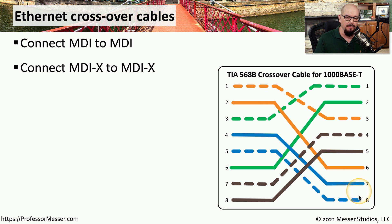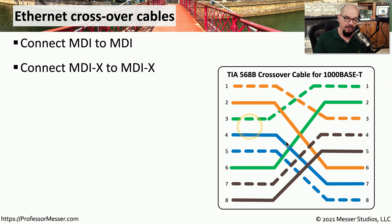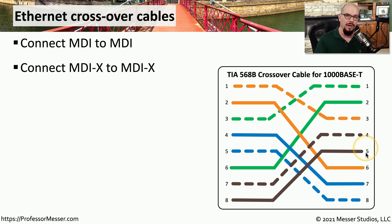This is the crossover cable pinout for 1000BASE-T based on the 802.3 standard. Pin 1 goes to pin 3, pin 2 to 6, 3 to 1, 4 to 7, 5 to 8, 7 to 4, and 8 to 5. Because all eight wires are used in gigabit communication, we need to cross over all eight of those wires to create a crossover cable.